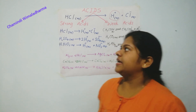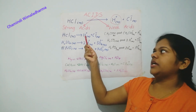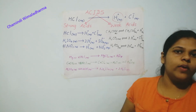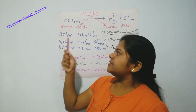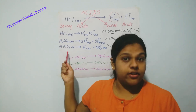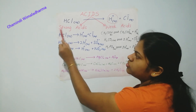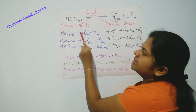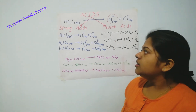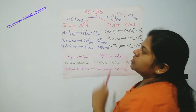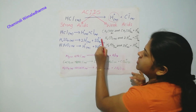A strong acid means these acids can completely dissociate into a positive ion and a negative ion. Strong acids — examples are Hydrochloric Acid, Sulphuric Acid, and Nitric Acid. When they are in an aqueous solution, they completely turn into H+ and Cl-. In Sulphuric Acid, the same thing is happening — they convert into H+ and SO4 2-.